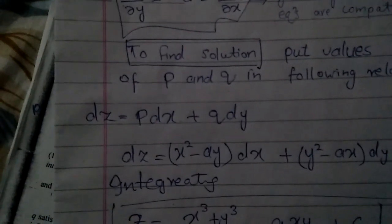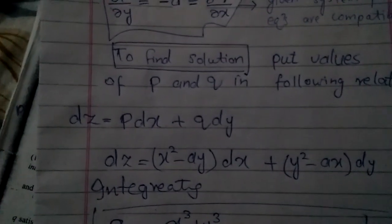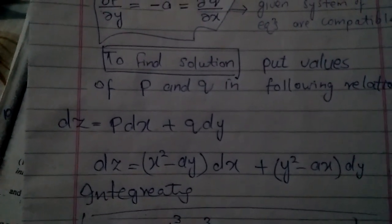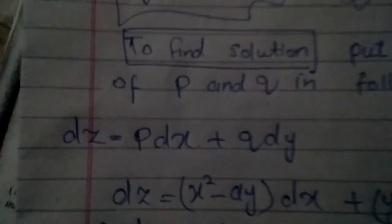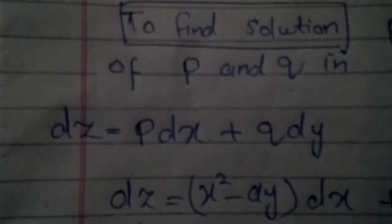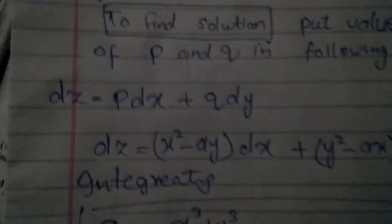Let's see how to find the solution. We put the values of P and Q in the relation dz equals P dx plus Q dy.